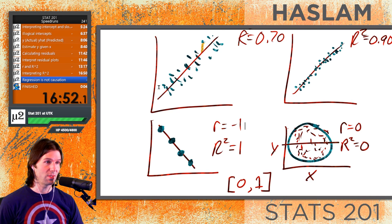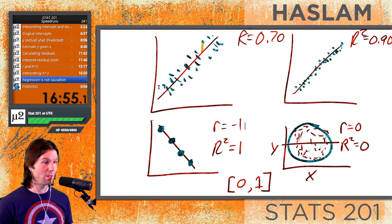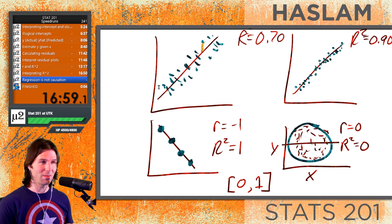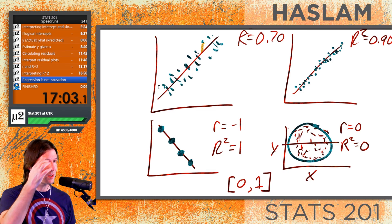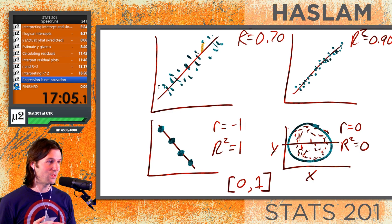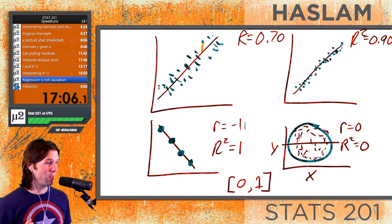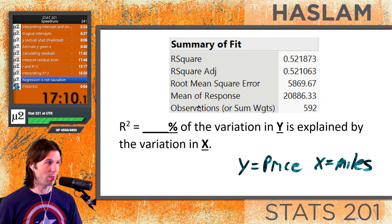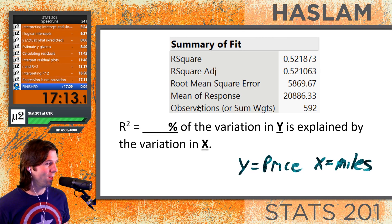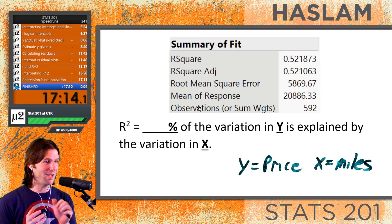One big thing: regression is not causation. This is just an equation — it doesn't cause anything. If the word 'cause' appears on a test, that's a red flag. We are not talking about causal relationships; we're just using an equation that explains and predicts. It doesn't mean one variable causes another to change. With that, we're done — good luck and have a great night!